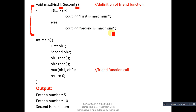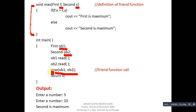After the definition of max, the main function is defined. Inside main, two objects — ob1 for the first class and ob2 for the second class — are declared. They call their respective read functions. Then max is called — notice that max is called without any implicit object; all arguments are passed explicitly. This calling statement invokes the max definition and displays a result on the console.